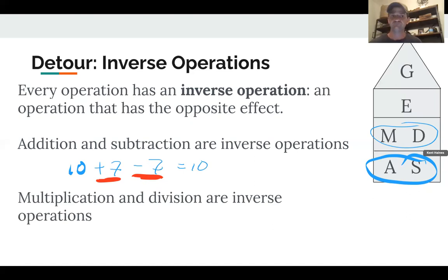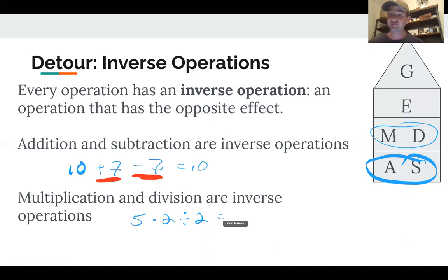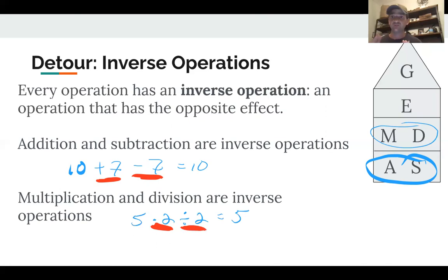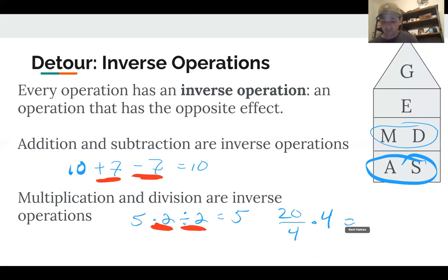The same is true of multiplication and division. For example: 5 times 2 divided by 2 — 5 times 2 is 10, divided by 2 goes back to 5. And it works in the other order too: 20 divided by 4 is 5, times 4 gets you back to 20. So dividing by 4 and multiplying by 4 undo each other — those are inverse operations.